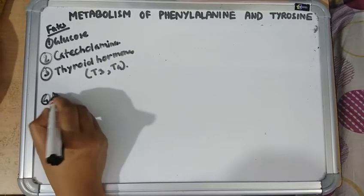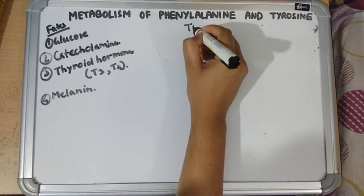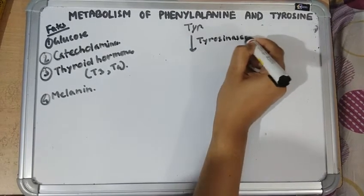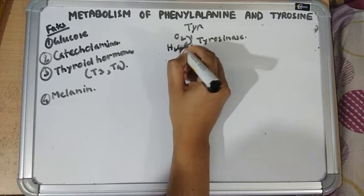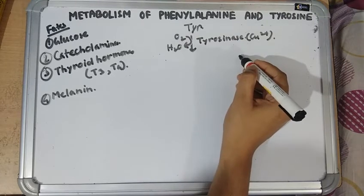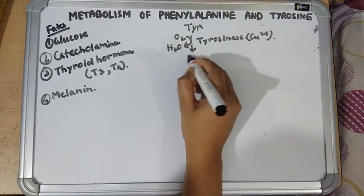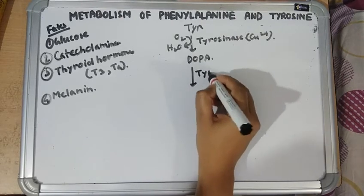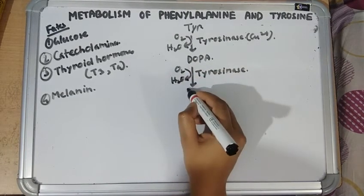Next is melanin synthesis. Melanin is a pigment synthesized by melanoblasts. First, tyrosine is acted upon by the enzyme tyrosinase, which is a hydroxylase different from tyrosine hydroxylase. It contains copper, does not need tetrahydrobiopterin, and functions in melanoblasts. This forms DOPA, and then the same enzyme tyrosinase acts on DOPA to form dopaquinone.